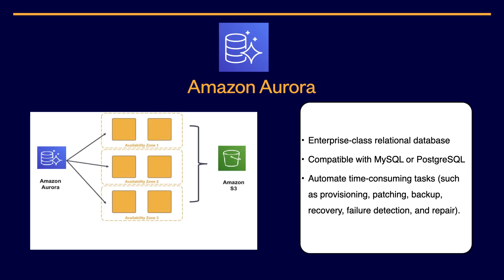Amazon Aurora is another AWS product. It is a MySQL and PostgreSQL compatible relational database built for the cloud. It combines the performance and availability of high-end commercial databases with the simplicity and cost-effectiveness of open source databases. Aurora is a fully managed service designed to automate time-consuming tasks like provisioning, patching, backup, recovery, failure detection, and repair.